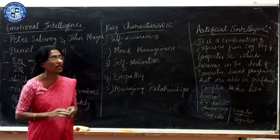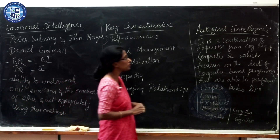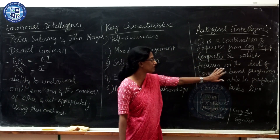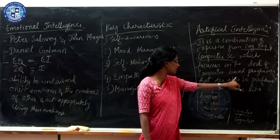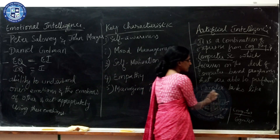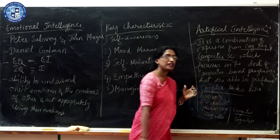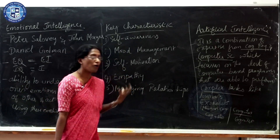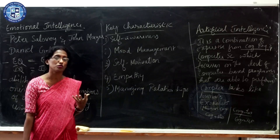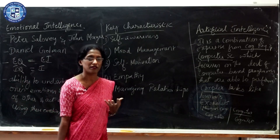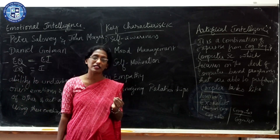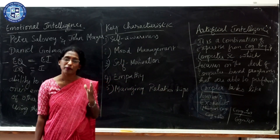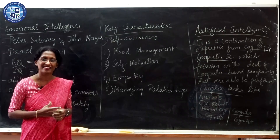Artificial intelligence is a combination of expertise from cognitive psychology and computer science, focusing on developing computer-based programs that can perform complex tasks like humans — such as robots. Human cognition involves the interaction of cognitive and biological systems, whereas computers operate mainly on the cognitive domain. Thank you.